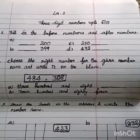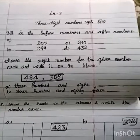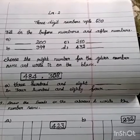All of you take your Max note, pencil and eraser, write neatly with your own handwriting. First, you have to write lesson 2, then three digit numbers up to 500.